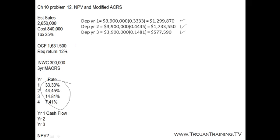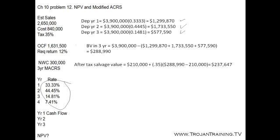The book value of the equipment at the end of the three years will be the original cost minus the accumulated depreciation. So the book value at the end of three years is $288,990.